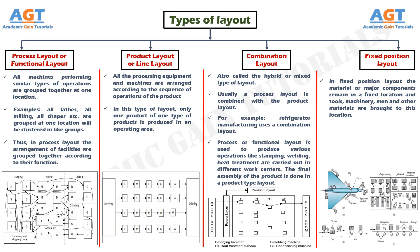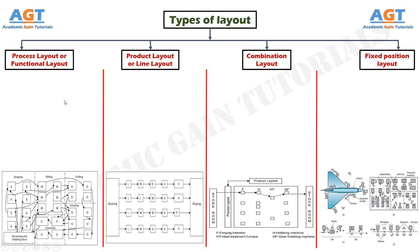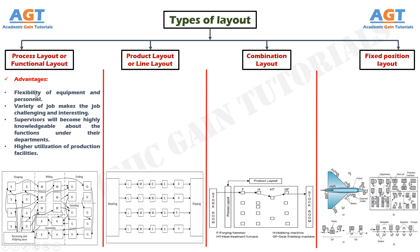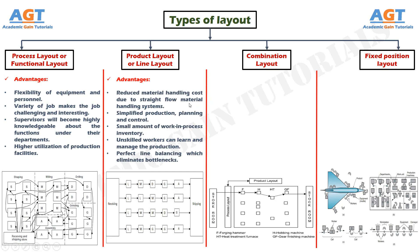Now that we have discussed about them in details, let's look at the advantages and disadvantages of different types of layouts. Advantages of process layout or functional layout: flexibility of equipment and personnel; variety of job makes the job challenging and interesting; supervisors will become highly knowledgeable about functions under their departments; higher utilization of production facilities. Advantages of product layout or line layout: reduced material handling cost due to straight flow material handling systems; simplified production planning and control; small amount of work-in-process inventory; unskilled workers can learn and manage the production; perfect line balancing which eliminates bottlenecks.